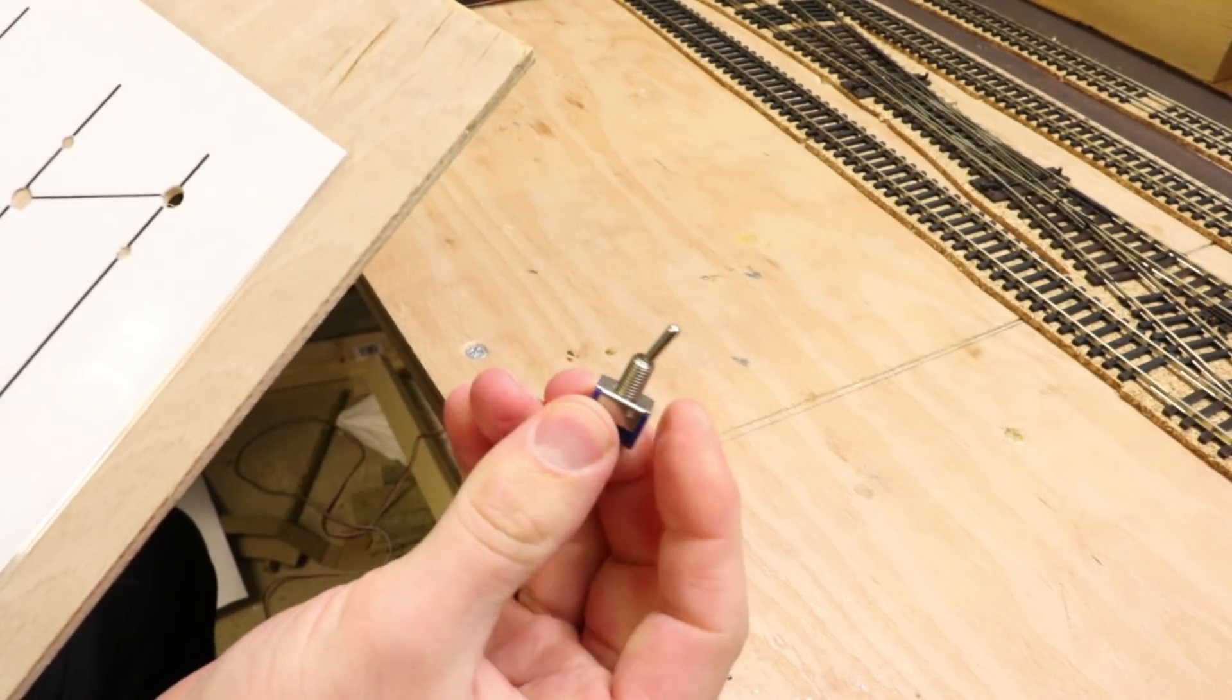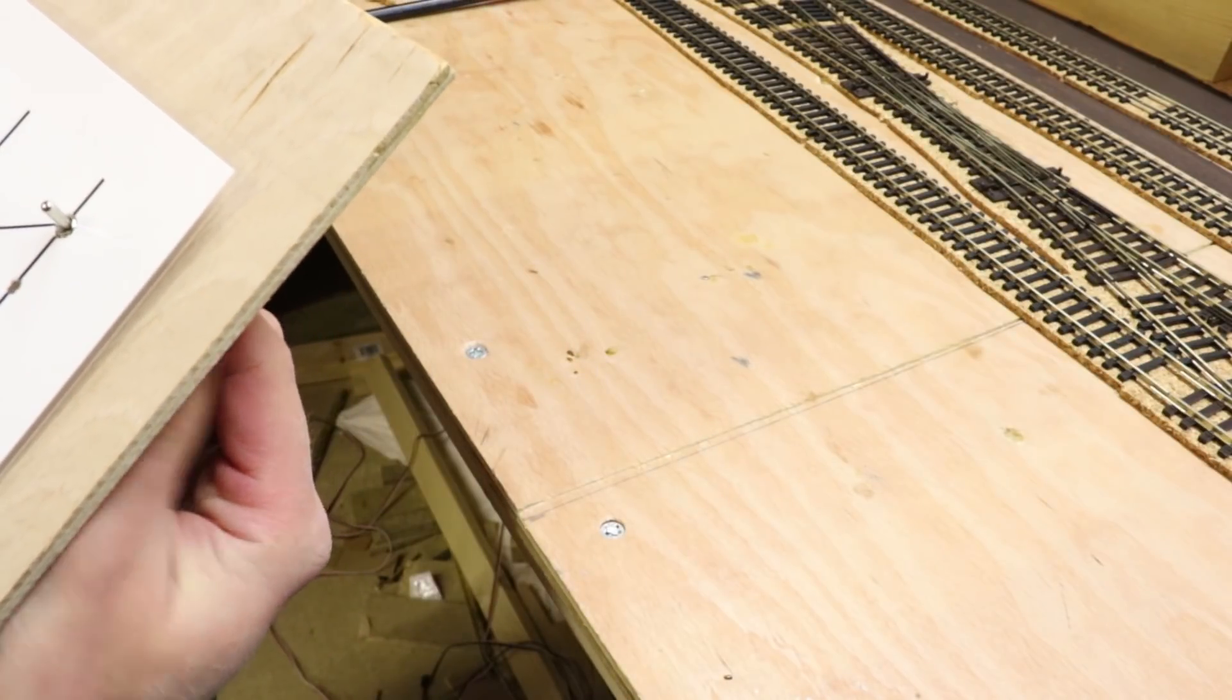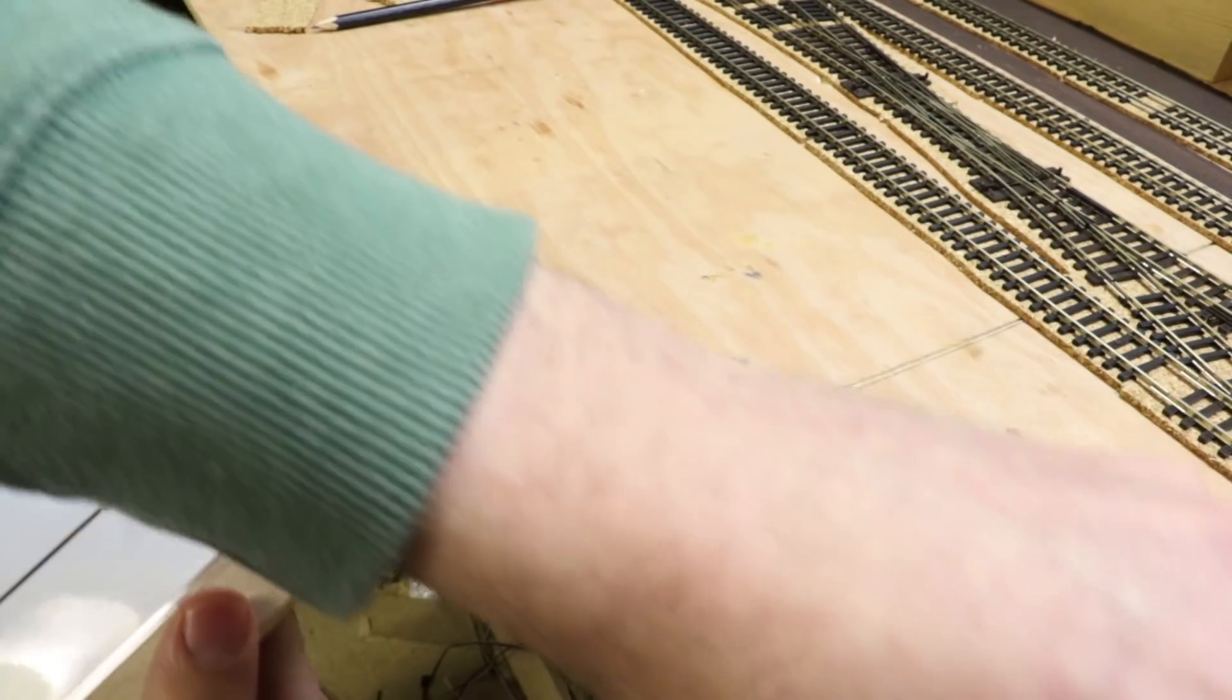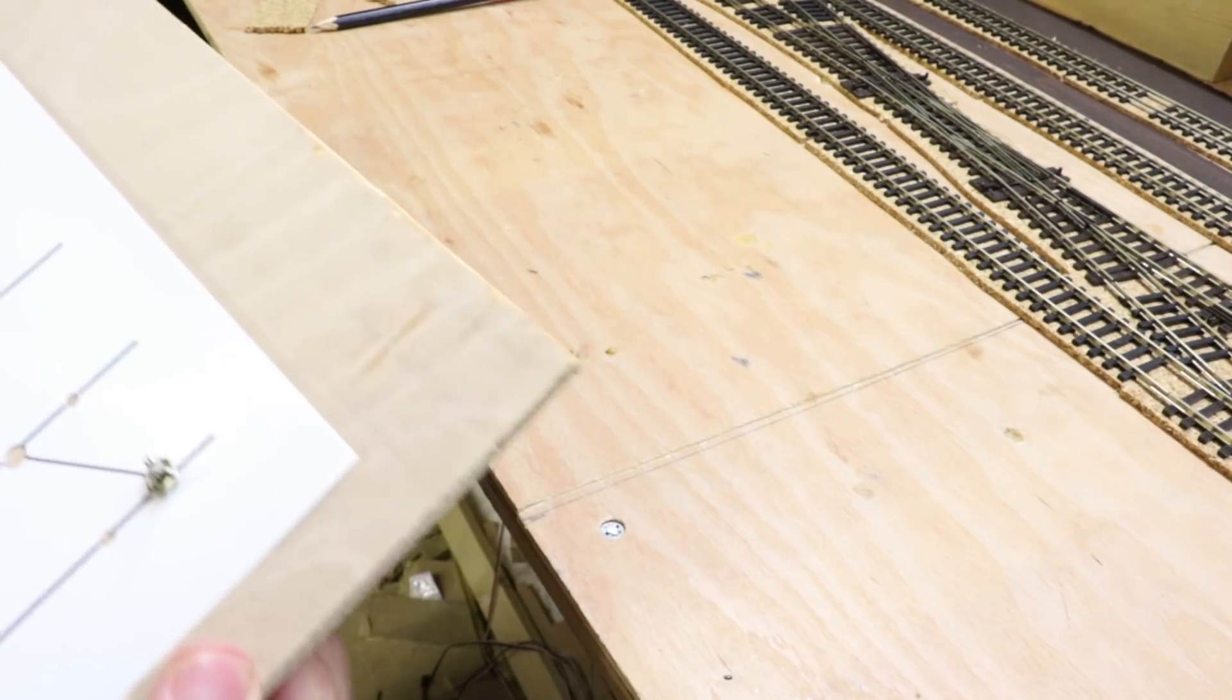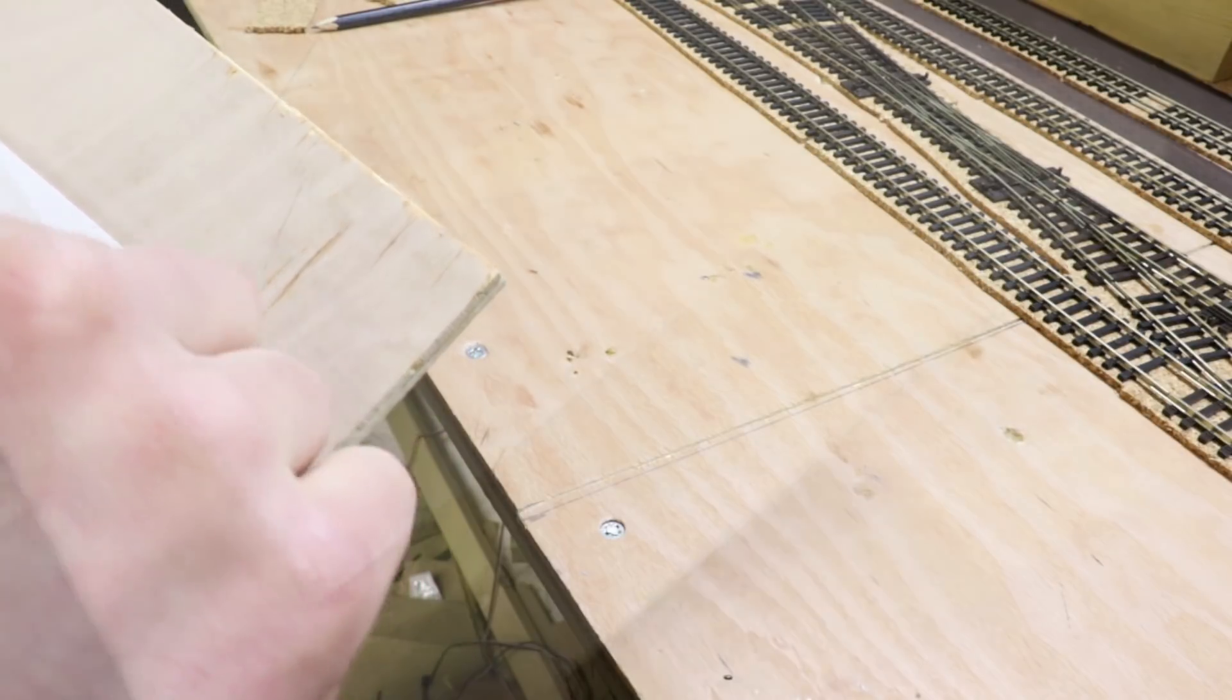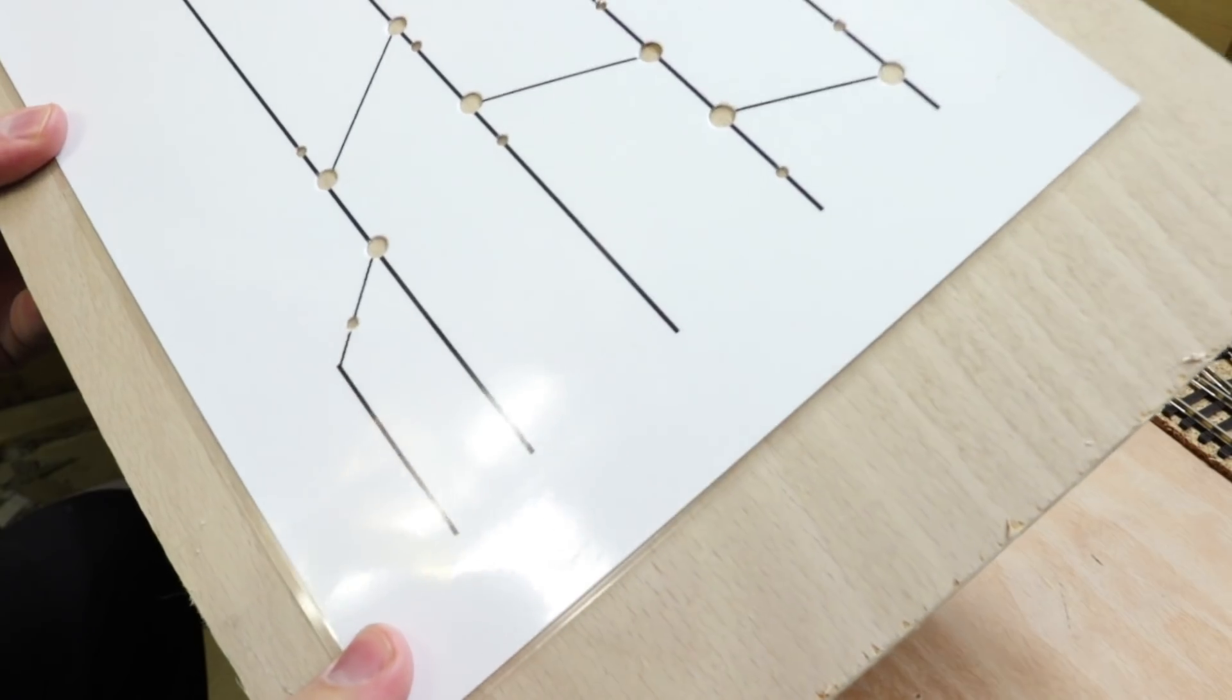So the switch, I've taken all the washers and everything off, should fit through there nicely, and then we've got one little nut, so that will help keep that in position while I mark the rest of the holes.